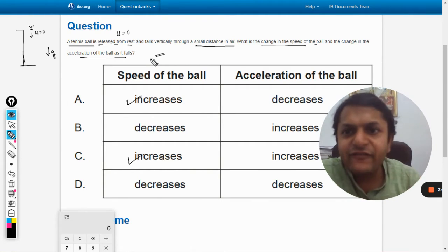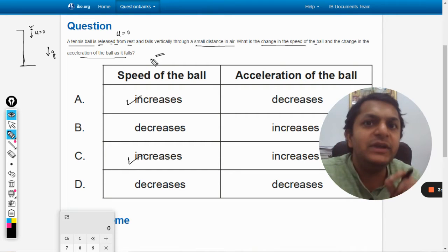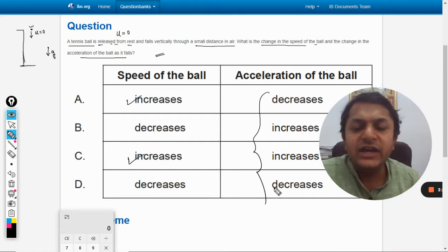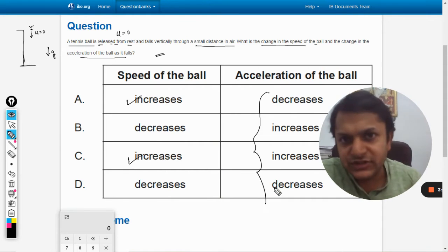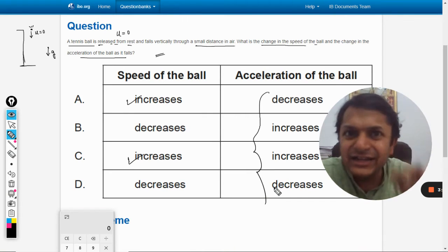But if it is neglected the acceleration due to gravity should be constant and that will be the acceleration of the ball, so it will be constant, it will neither increase nor decrease. But constant is not there in the options, so it means air drag is definitely considered.